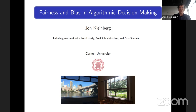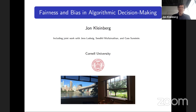What I wanted to talk about today was a particular issue in data science, algorithms, and machine learning which has been getting an increasing amount of attention: questions about fairness and bias that arise when algorithms are making decisions about individuals. This is joint work I've been doing with three co-authors representing four distinct areas of study: Jens Ludwig, a public policy researcher at the University of Chicago; Sendhil Mullainathan, a behavioral economist also at Chicago; and Cass Sunstein, a law professor at Harvard.